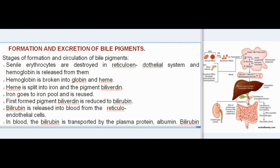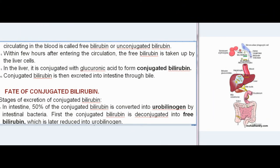Stages of formation of bile pigments: senile erythrocytes are destroyed in the reticuloendothelial system and hemoglobin is released. Hemoglobin is broken into globin and heme. Heme is split into iron and the pigment biliverdin. Iron goes to the iron pool and is reused. Biliverdin is reduced to bilirubin. Bilirubin is released into blood from reticuloendothelial cells and is transported by the plasma protein albumin. Bilirubin circulating in the blood is called free bilirubin or unconjugated bilirubin.